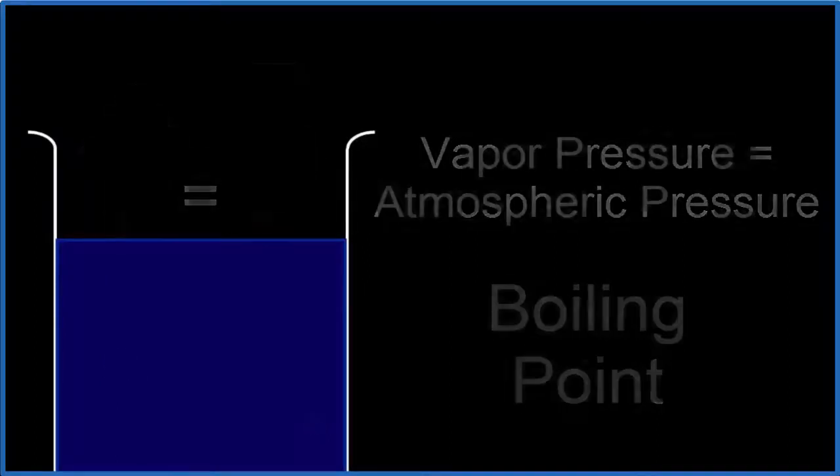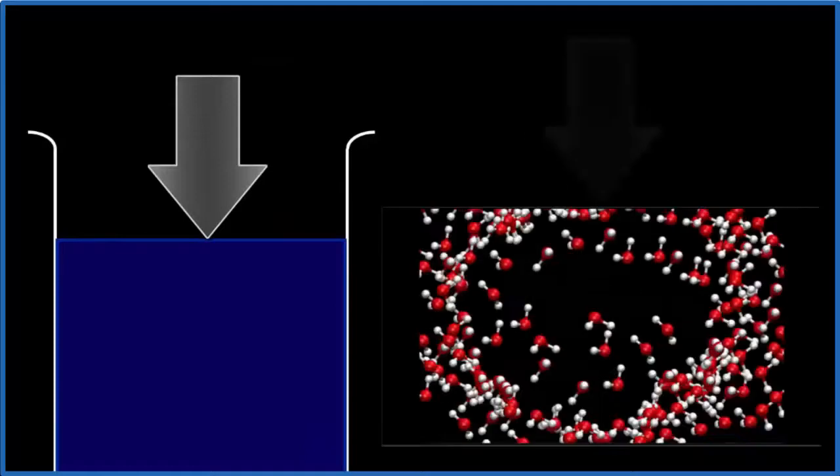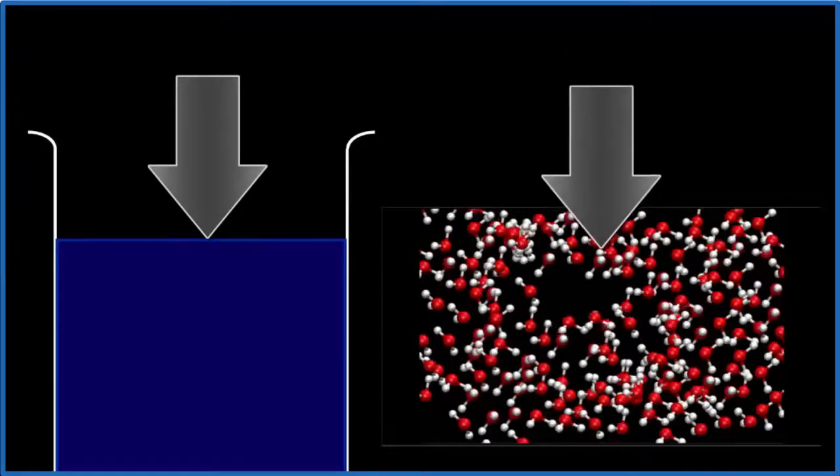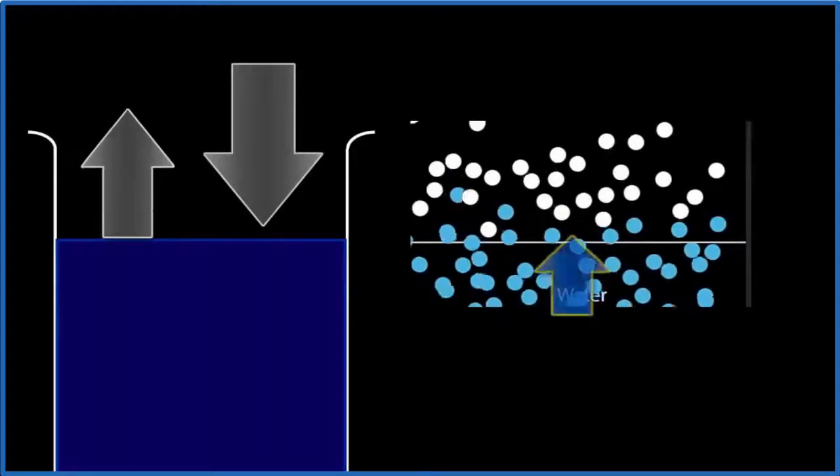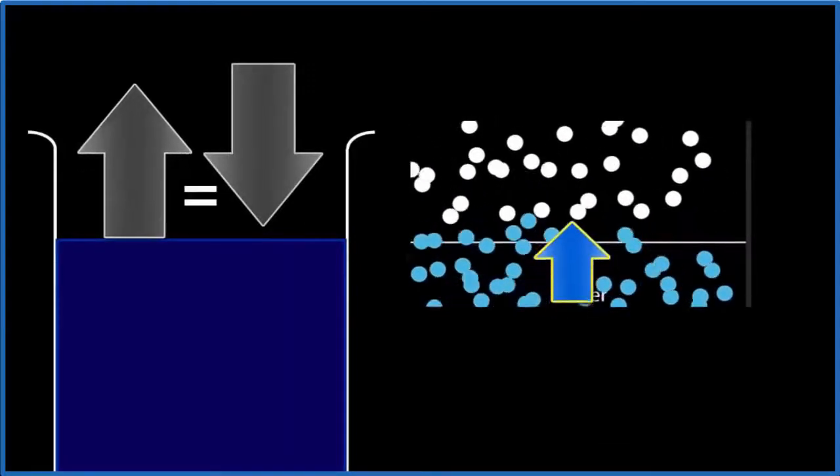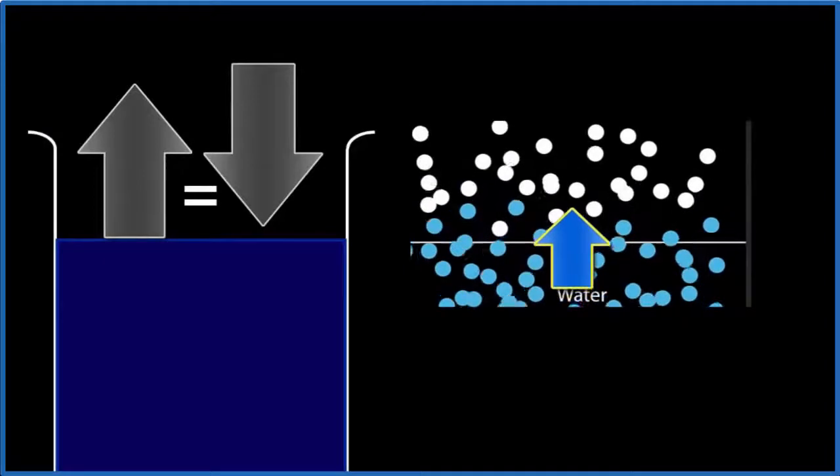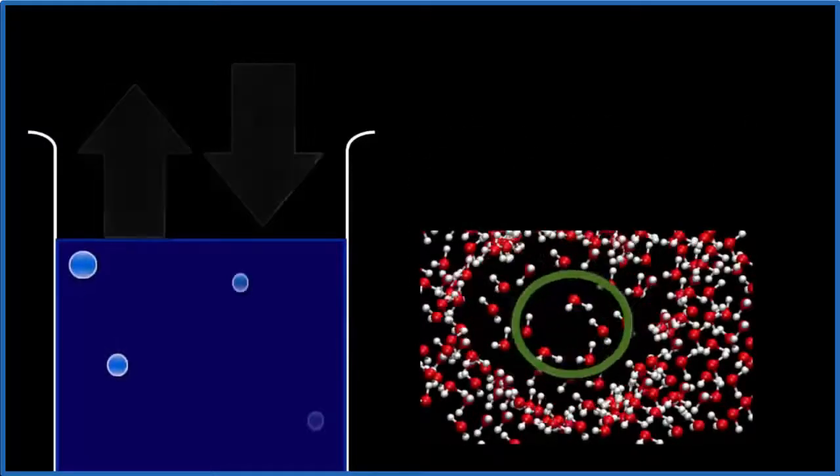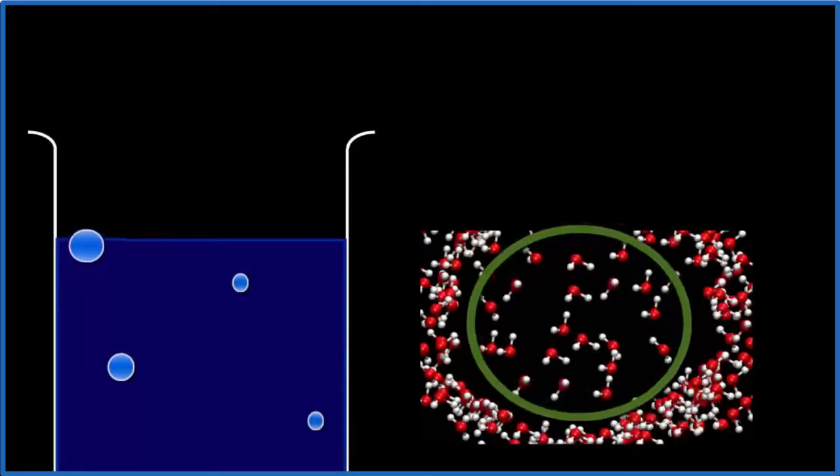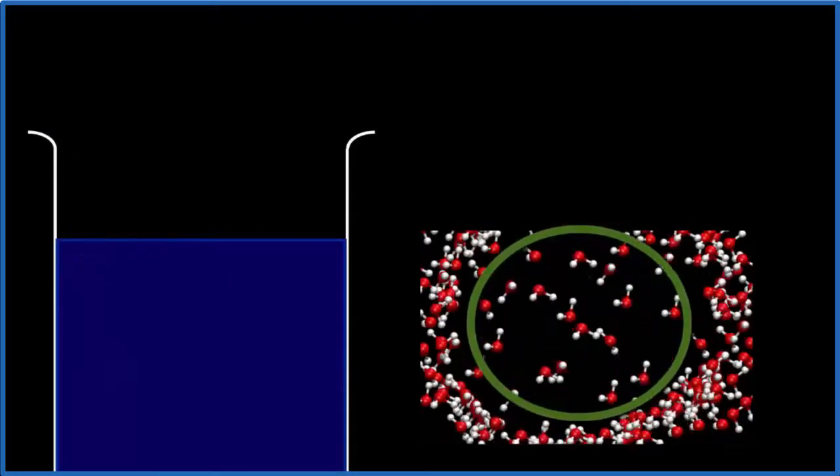Think of it this way. Atmospheric pressure pushes down, and that makes it difficult for the water molecules to spread out and form a bubble. But when the vapor pressure increases, molecules from the liquid escape, and they push against the air molecules and effectively reduce some of the pressure. This makes it easier for the liquid molecules to spread out, form a gas, and rise to the surface. That's boiling.